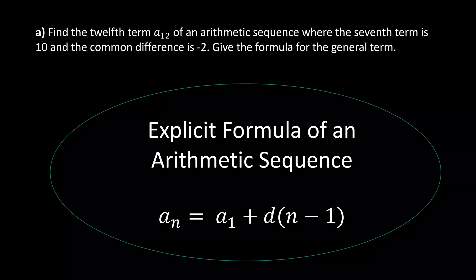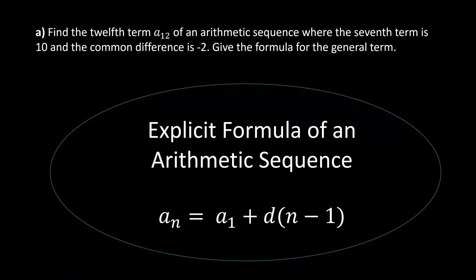Hello everyone. In this problem, we are to find the 12th term of an arithmetic sequence where the seventh term is given to be 10 and the common difference is negative 2. We are also to find the formula for the general term.